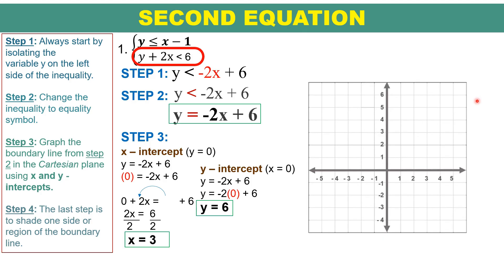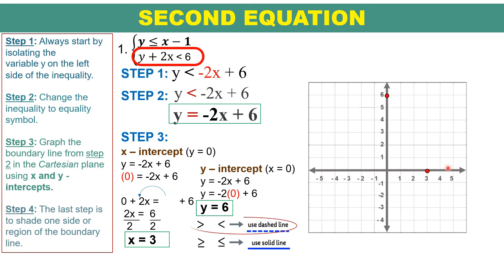Let us graph these two intercepts. For the x-intercept, positive 3 is here on the x-axis. Plot the point. The y-intercept is positive 6 on the y-axis — plot that point. Then connect the line. Looking at the inequality symbol, it has less than, so we use a dashed line to connect these two points.